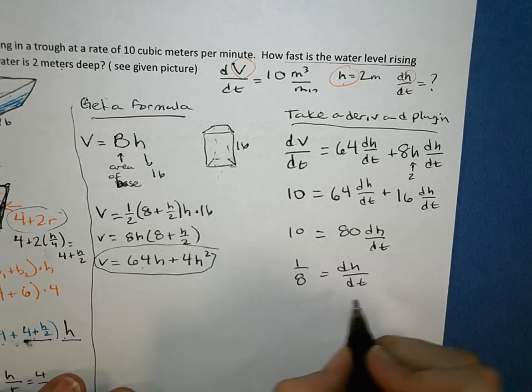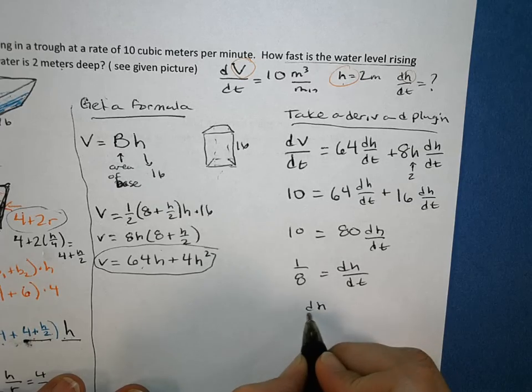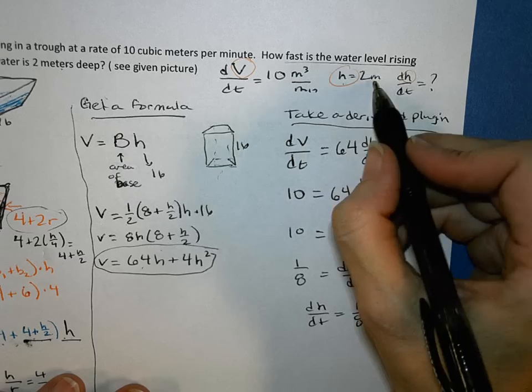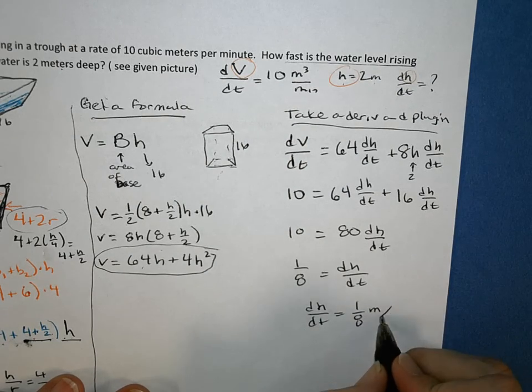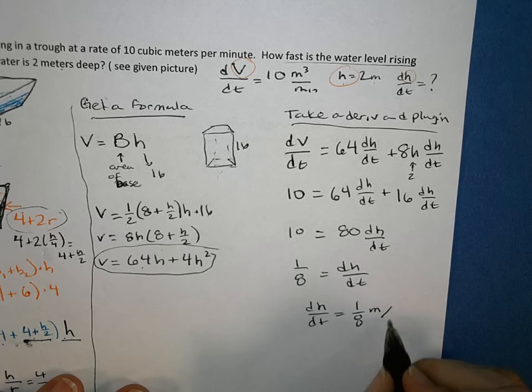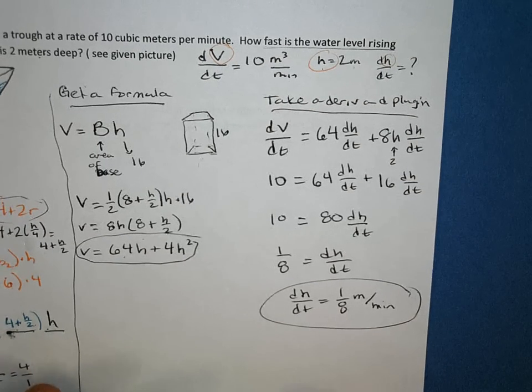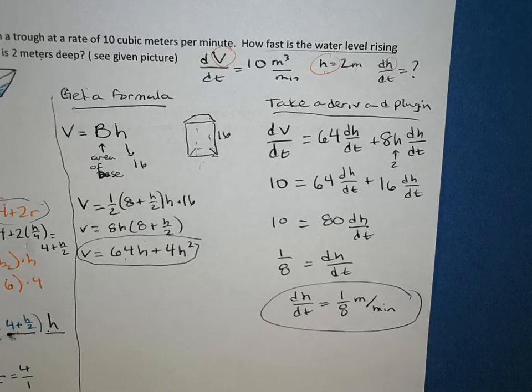And we think about that in terms of the units. I would say that is 1/8, what unit am I using? Meters, of a meter per, what time am I using? Minutes. So 1/8 of a meter per minute is how the height is changing. Because it's positive, I know it's going up. 1/8 of a meter per minute. And that should be very similar to your number 37 that you have to do on the homework. So good luck.